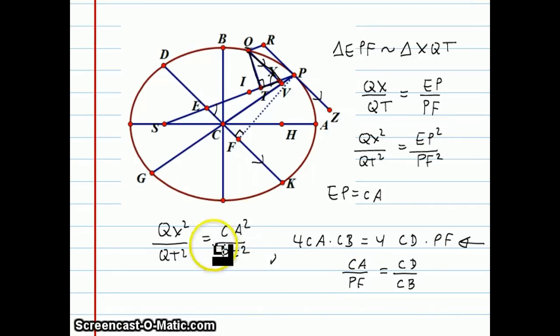But CA over PF is also the second half of this proportion here, so I can replace that proportion and get QX squared over QT squared, instead equals CD squared over CB squared. And this is the fifth and final proportion.